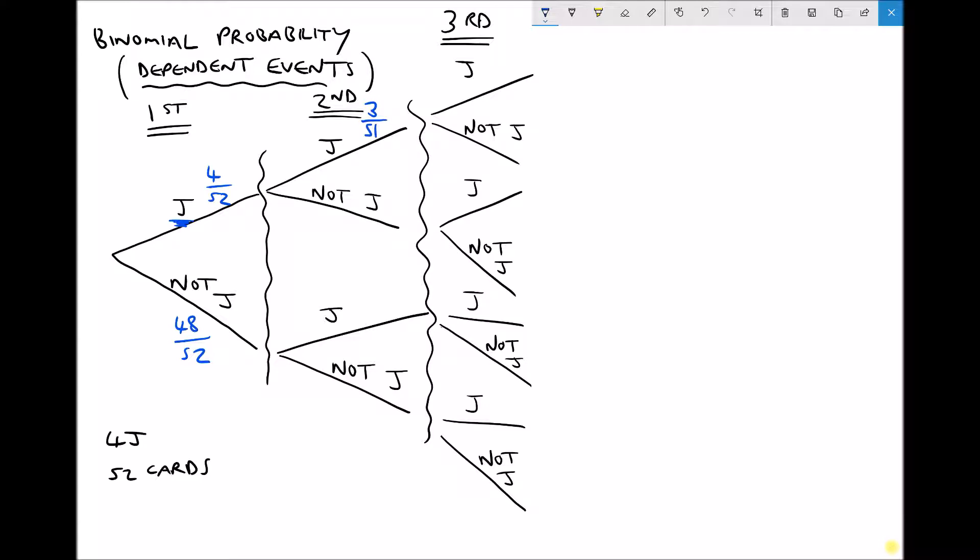And our chances of getting a not jack, remember these have to add up to one, so it must be 48 out of 51. There's still 48 non-jack cards in that pack.